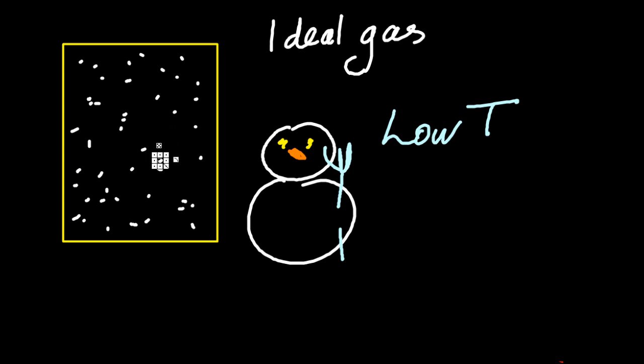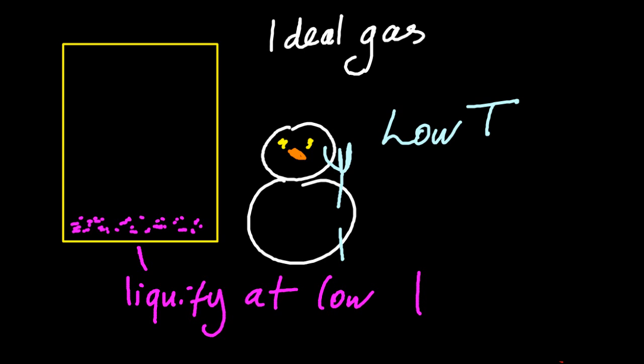The slower things go, the easier it is for them to stick together, and that's bad, because if you stick a gas together, well, that's called a liquid. And so the colder it is, the more liquidy, if you will, the gas is becoming, the more it's going to stick to each other.